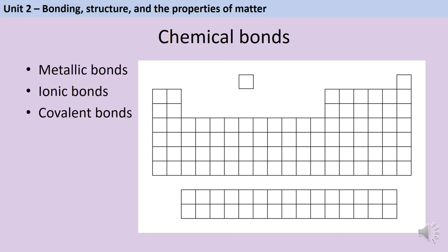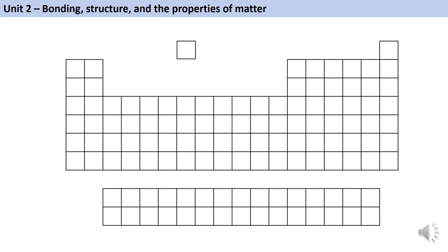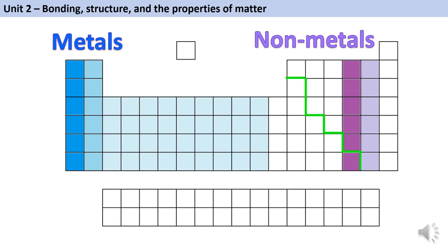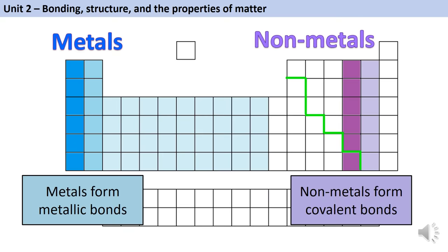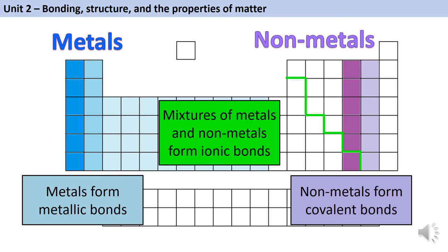Unit 2 covers bonds: metallic, ionic, and covalent. Rather than being told the bond type, you'll need to identify it from a substance name using the periodic table. If all atoms come from the metal side, there are metallic bonds. If all come from the non-metal side, there are covalent bonds. If atoms come from both sides, the substance contains ionic bonds — remembering that hydrogen is a non-metal despite its position.